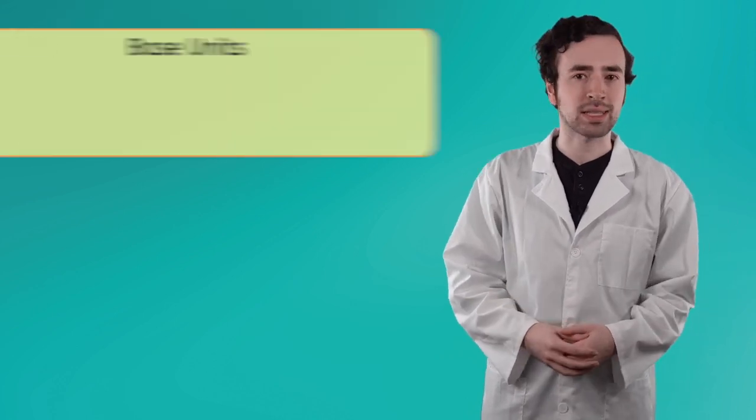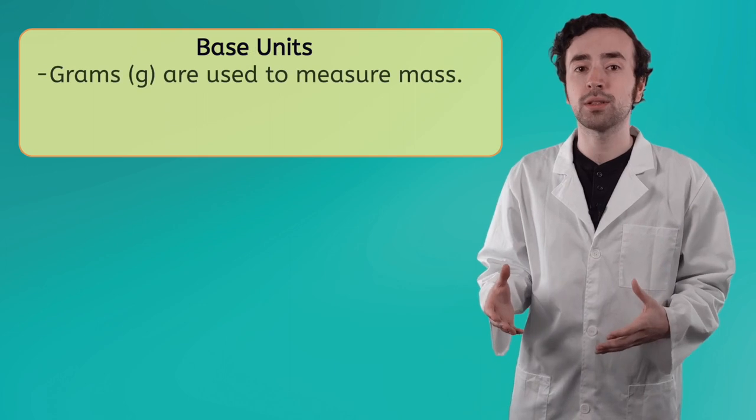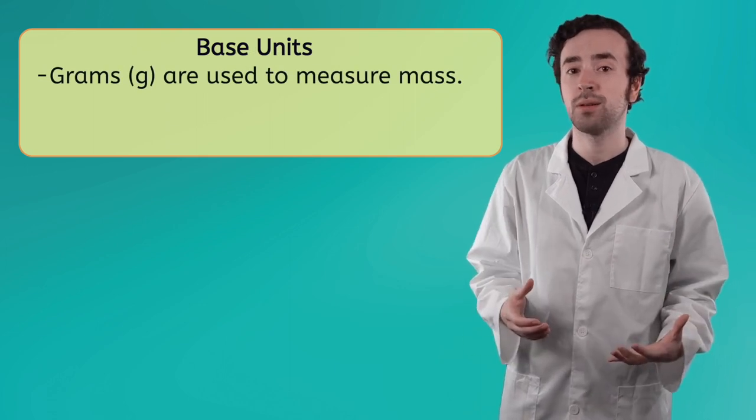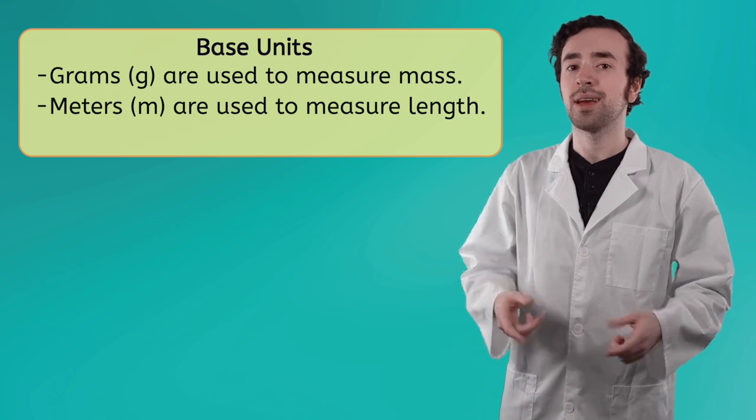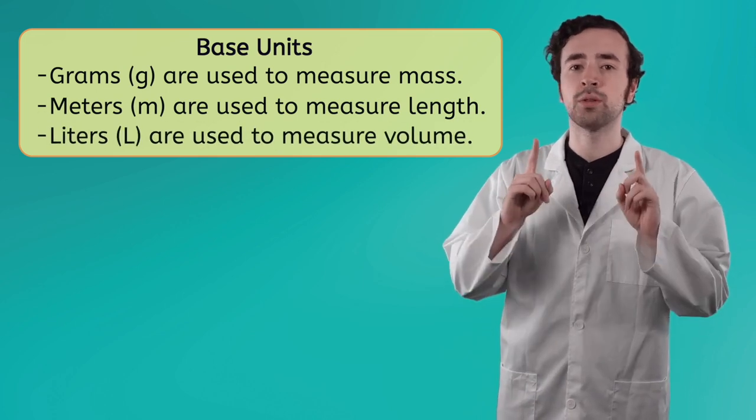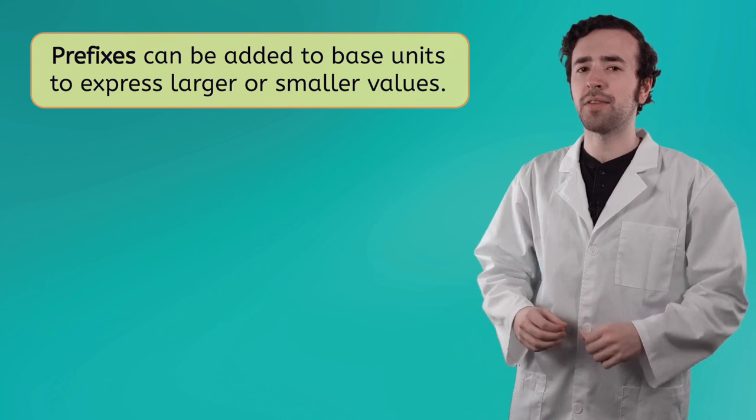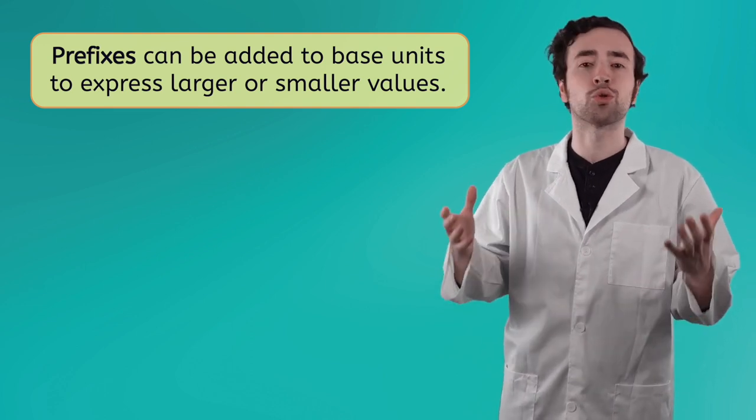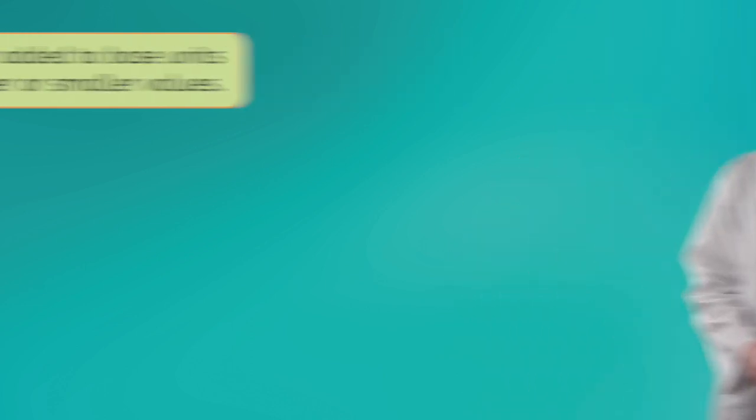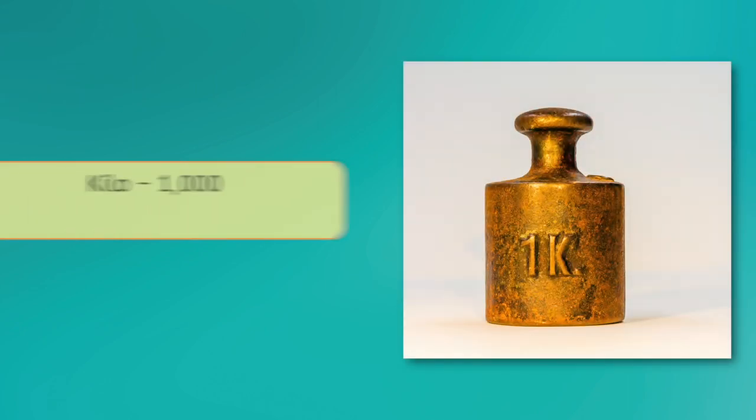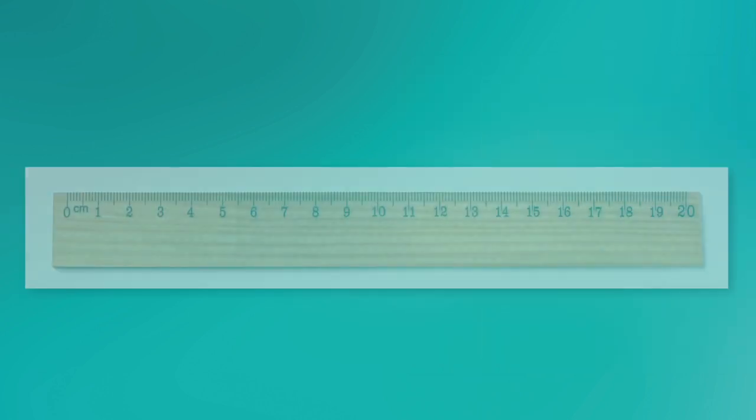In the metric system we use grams to measure mass, meters to measure length, and liters to measure volume. These base units tell us what we're measuring, and from there we can use specific prefixes based on the power of 10 to express larger or smaller values. For example, kilo means 1,000, so 1 kilogram is 1,000 grams.